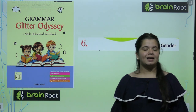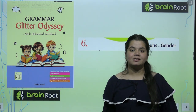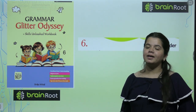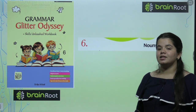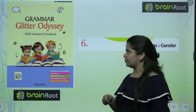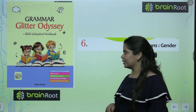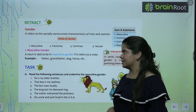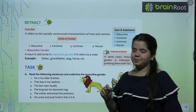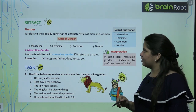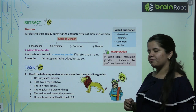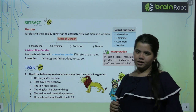We have read the kinds of nouns and the number of nouns. Now we are learning Nouns Gender. Let's see what we have in this chapter. First we have Gender — it refers to the socially constructed characteristics of men and women.